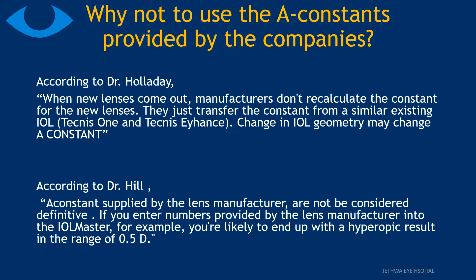According to Holladay, when new lenses come out, manufacturers don't recalculate the constant for new lenses — they just transfer the constant from a similar existing IOL. For example, Tecnis 1 and Tecnis 1-Piece have the same A-Constant. A change in IOL geometry may change the A-Constant. Dr. Haigis says that A-Constants supplied by lens manufacturers are not considered definitive; if you enter numbers provided by the manufacturer into the IOLMaster, for example, you are likely to end up with hyperopic results in the range of half a diopter.